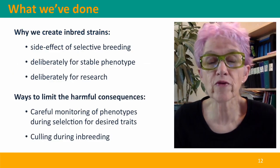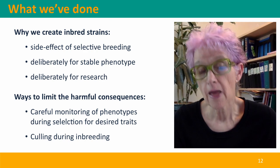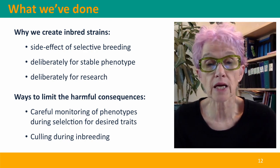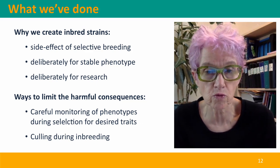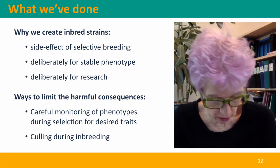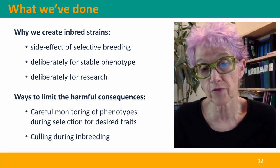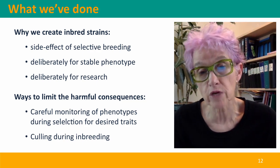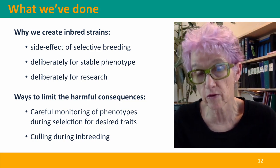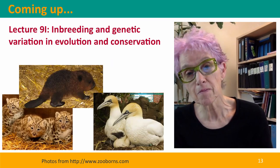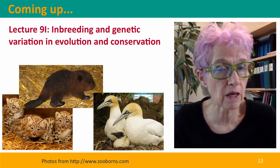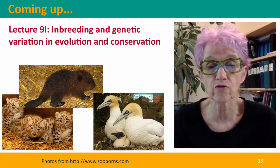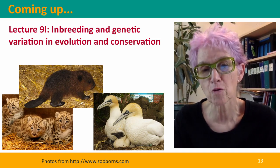So we've talked about why we create inbred strains — as a side effect of selective breeding programs or deliberately to get stable phenotypes, especially for biomedical research. We've also talked about how careful monitoring of phenotypes and culling can help solve the problem of inbreeding depression that occurs in any breeding program involving extensive inbreeding. Coming up next, we're going to think about unavoidable inbreeding in natural populations and the consequences for genetic variation that this entails. I hope to see you there.